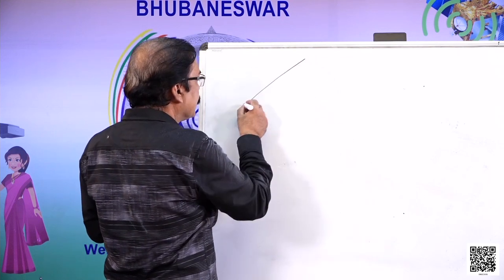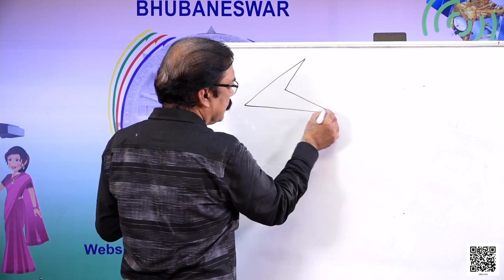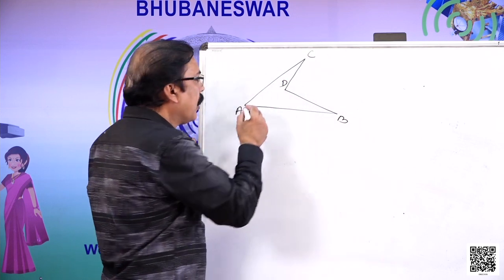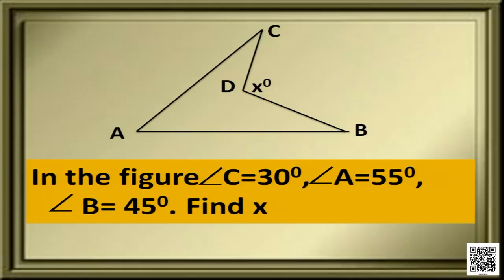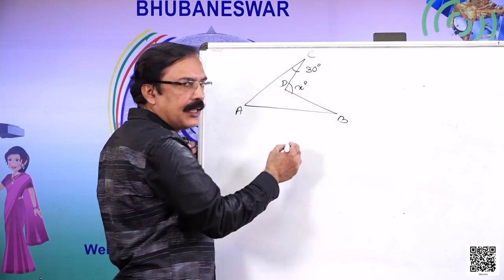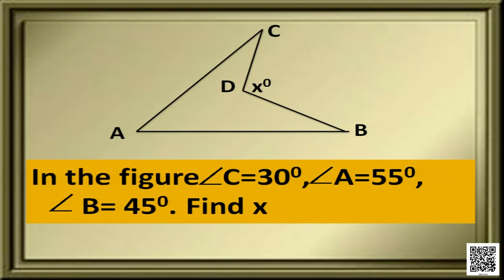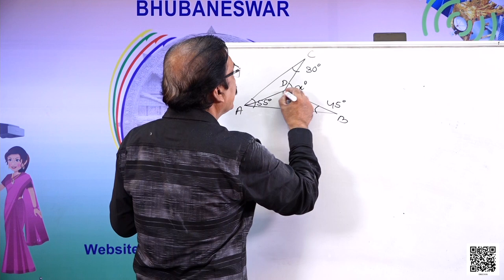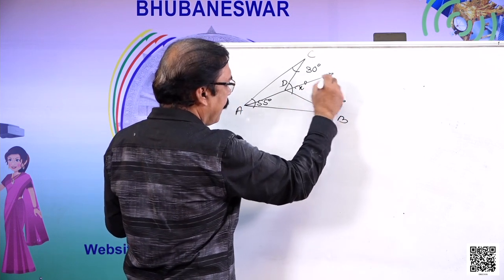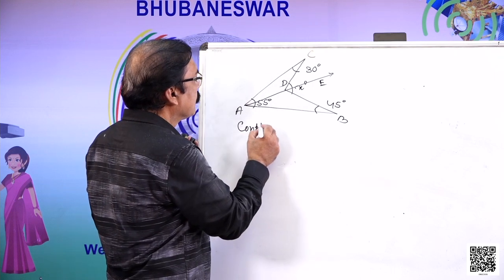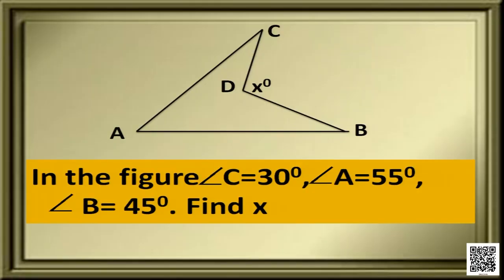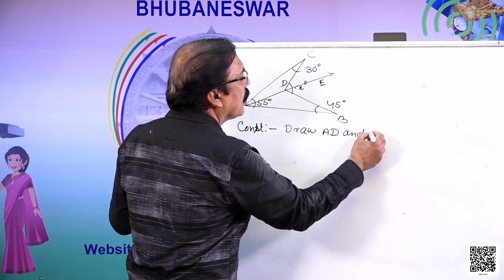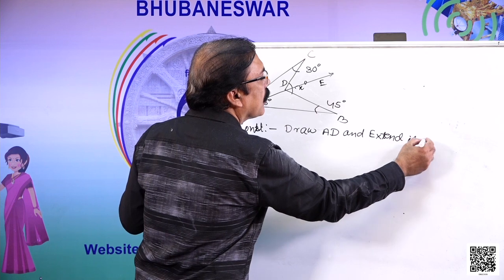The figure shows triangle with points A, B, C, and point D, with an angle X to be found. The value of angle C is 30 degrees, angle A is 55 degrees, and angle B is 45 degrees. To solve this, let's draw ray AD and extend it to point E. Construction: draw AD and extend it to E.